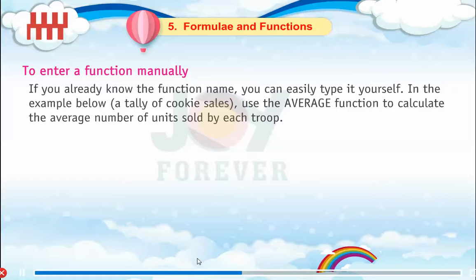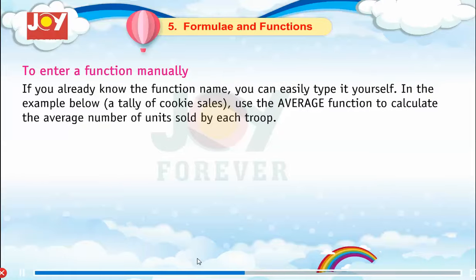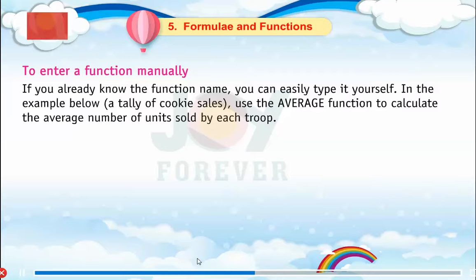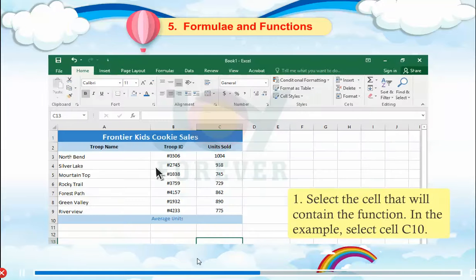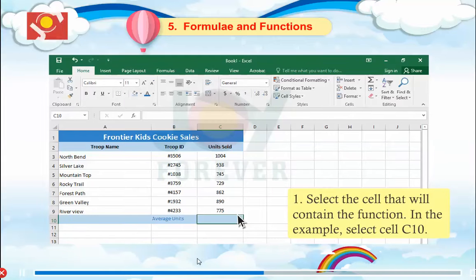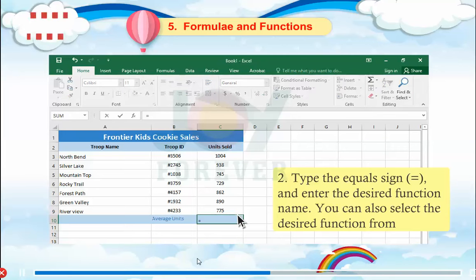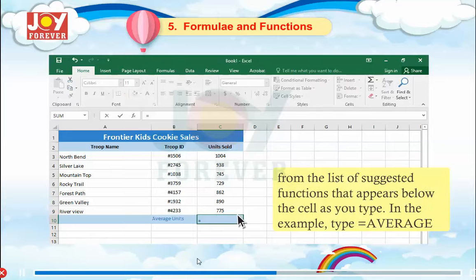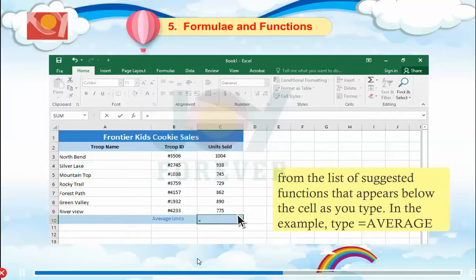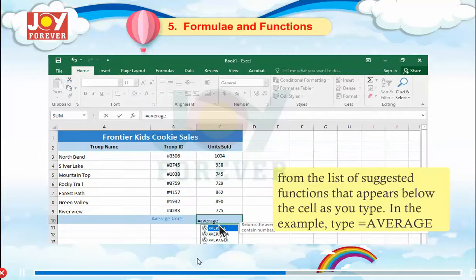To enter a function manually. If you already know the function name, you can easily type it yourself. In the example below, use the AVERAGE function to calculate the average number of units sold by each row. Step 1: Select the cell that will contain the function — select cell C10. Step 2: Type the equal sign and enter the desired function name. You can also select the desired function from the list of suggested functions that appears below the cell as you type — in this example, type =AVERAGE.